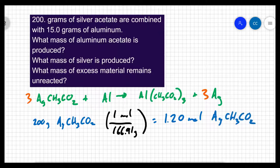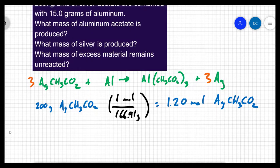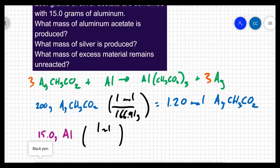Now we're given masses of both reactants, so we have to convert to moles twice, once for each of our two reactants. I'm given 15 grams of aluminum. One mole of aluminum is 26.982 grams. So that tells me I have 0.556 moles of aluminum.